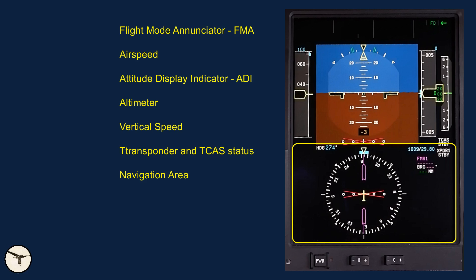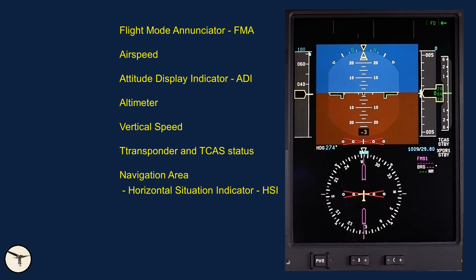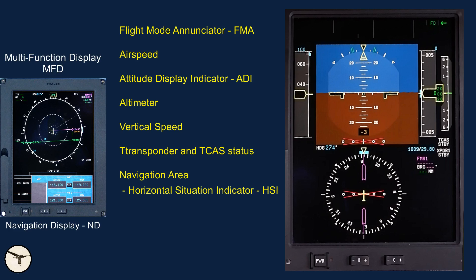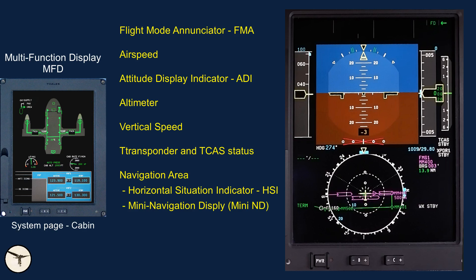The lower part of the screen is the navigation area. There are two modes. One is the horizontal situation indicator HSI, displayed when the associated multifunction display is showing the navigation display, called ND. When the MFD is showing other modes, like the system pages or the performance page, the navigation area switches to the second mode, called the Mini ND. It is a copy of the large navigation display on the MFD, plus the HSI indicator.